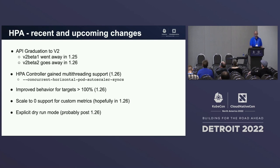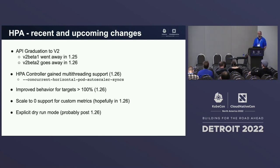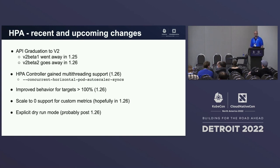Some users are heavily oversubscribing their cluster and use targets above 100% of utilization. Up to 1.26, we were prone to some corner-case issues, but with 1.26 this problem should be fixed. We still hope to finally land scale-to-zero support for custom metrics in the API with 1.26. And post-1.26, we are planning to have a dry-run mode which will allow you to test your HPA with different metrics without actually actuating the changes.